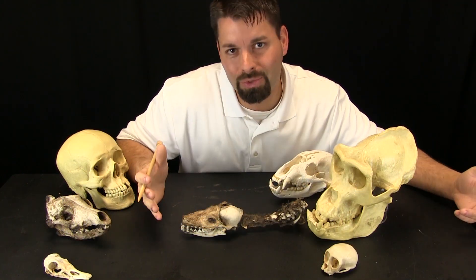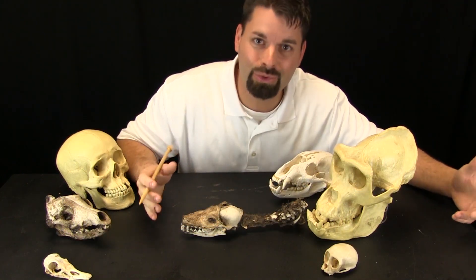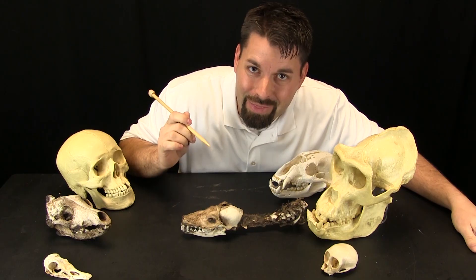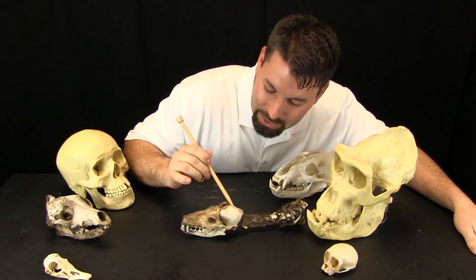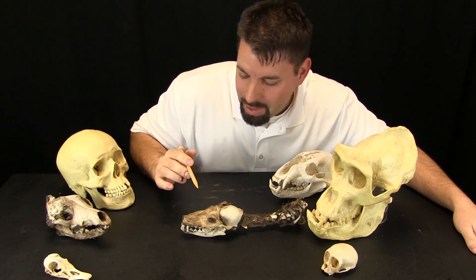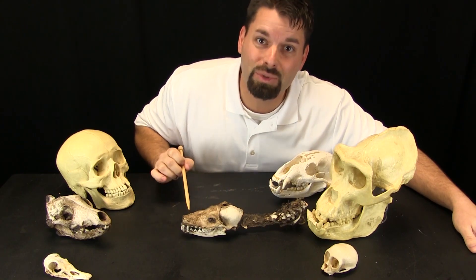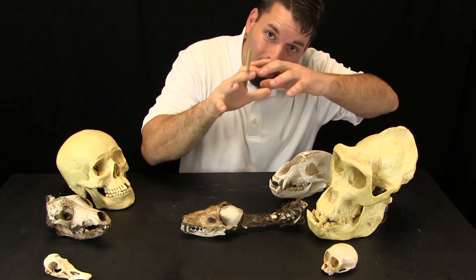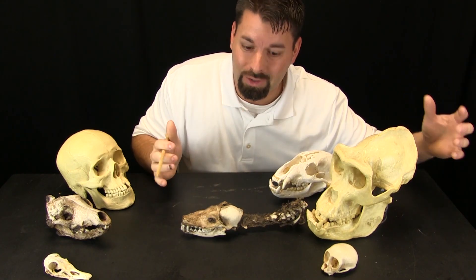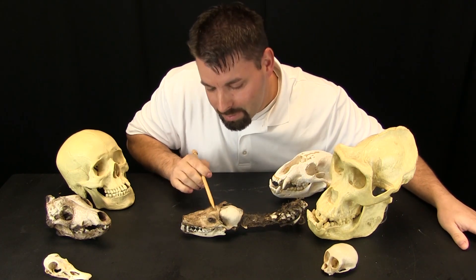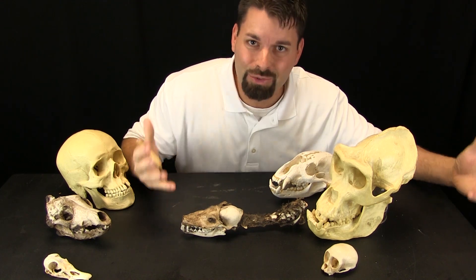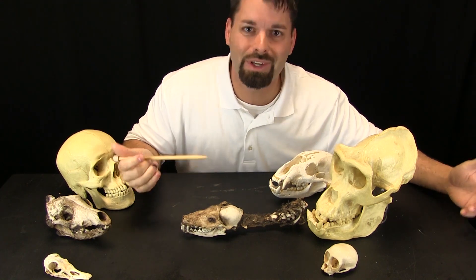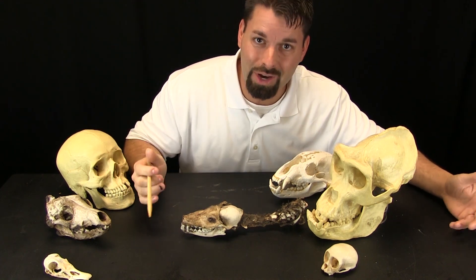That is pretty cool. Bones give animals their shape. I can clearly see the skull and this guy actually still has some skin on top of the skull. The skull is giving the skin some shape. That is what bones do — bones give animals their shape.